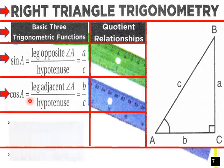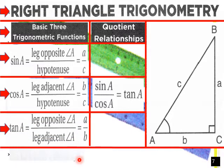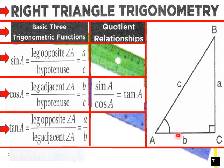Cosine A is the leg adjacent to angle A over the hypotenuse — so that would be b over c. And tangent A equals sine A over cosine A, which is the leg opposite A over the leg adjacent to A — so it would be a over b. So tangent is opposite over adjacent.